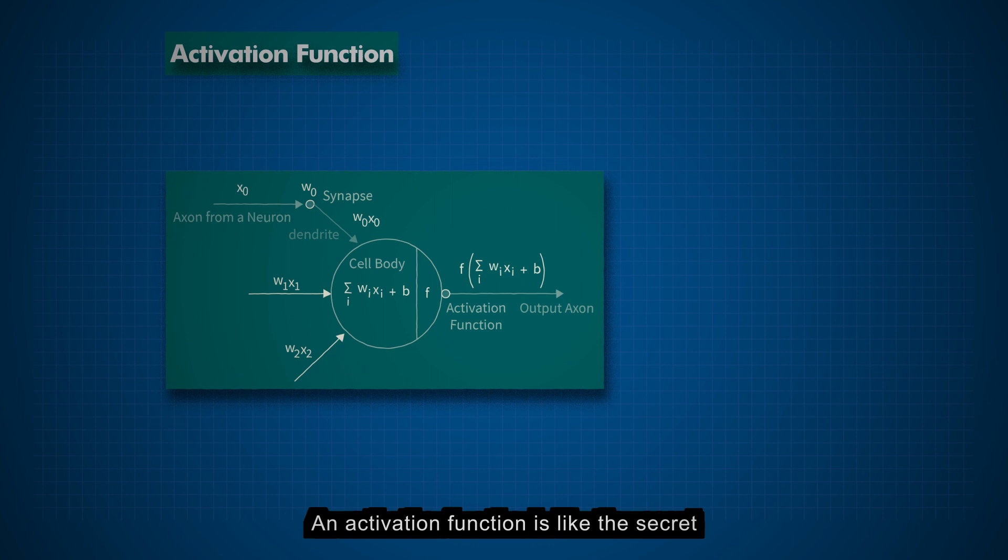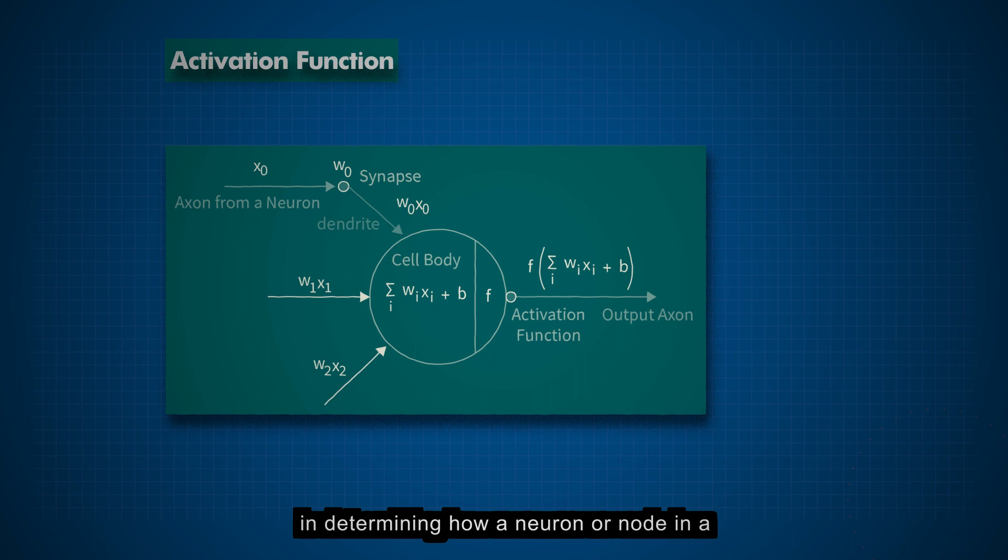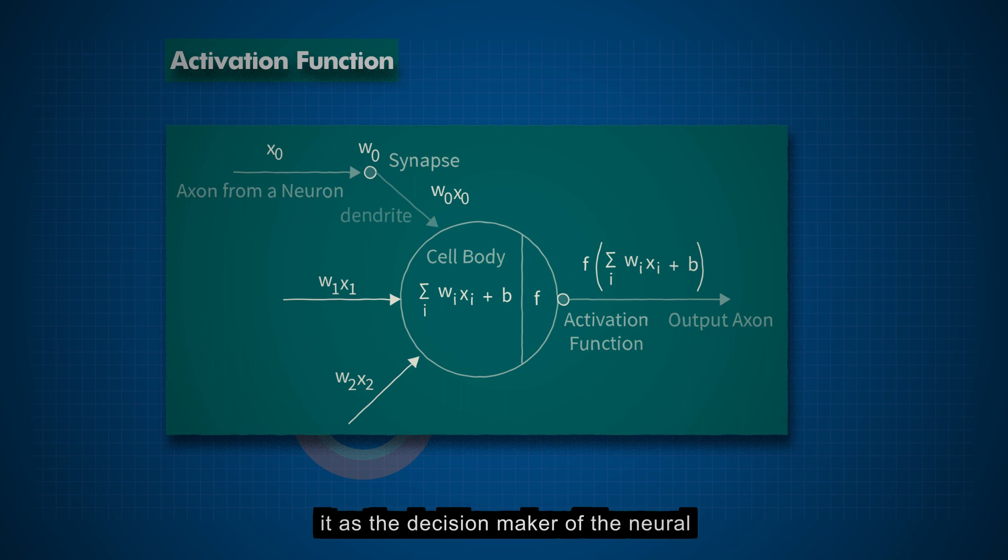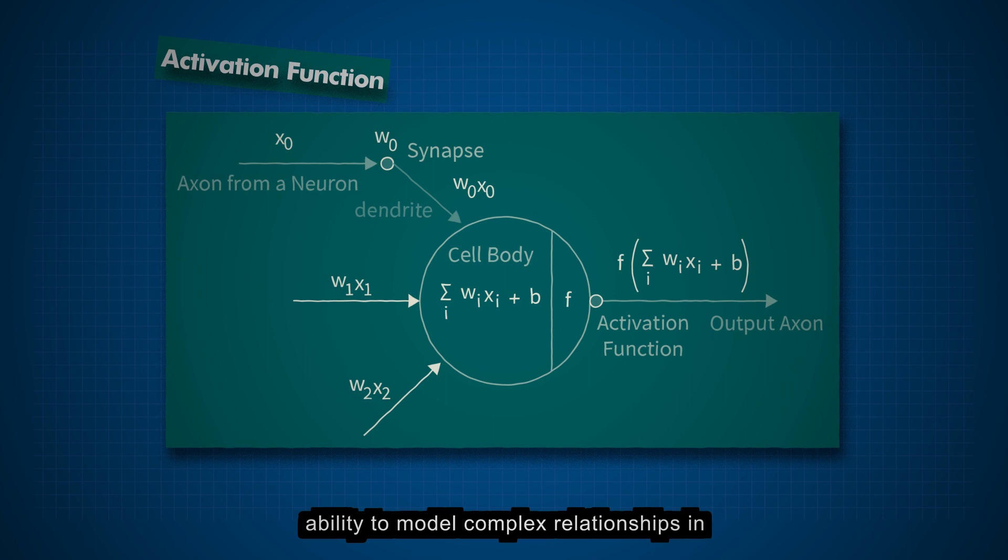An activation function is like the secret sauce that brings life and excitement to artificial neural networks. In the fascinating world of machine learning, activation functions play a crucial role in determining how a neuron or node in a neural network should fire or activate based on the inputs it receives. Think of it as the decision-maker of the neural network, responsible for introducing non-linearity to the system. You see, without an activation function, the neural network would just be a linear combination of inputs, and we'd lose the ability to model complex relationships in the data.